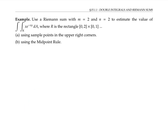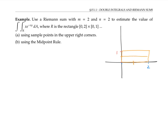Now let's use this Riemann sum definition to estimate a double integral, where our rectangle has x going from zero to two and y going from zero to one. We're asked to use m equals two and n equals two, so we want two rectangles in the x direction and two in the y direction, for a total of four sub-rectangles. First, let's use sample points in the upper right corners, so our sample points will be at the four upper-right corner locations.